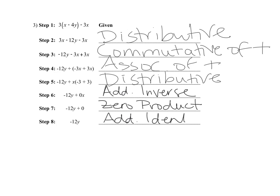If you notice, in both number two and number three the inverse property came before the identity property. You're going to find that that often happens in problems like this — typically we have to do the inverse property before we can do the identity property. That's just a helpful thing to pay attention to. Go ahead and try the rest on your own. Good luck!